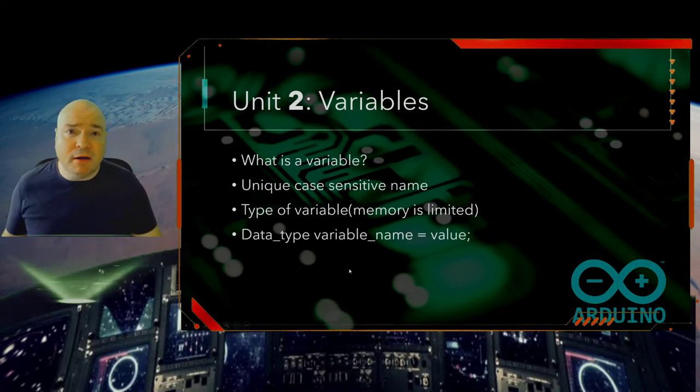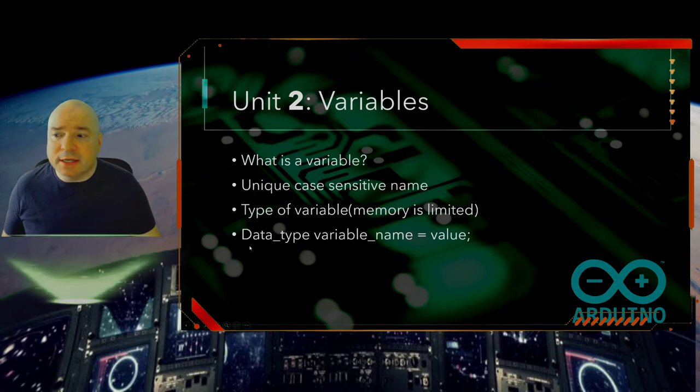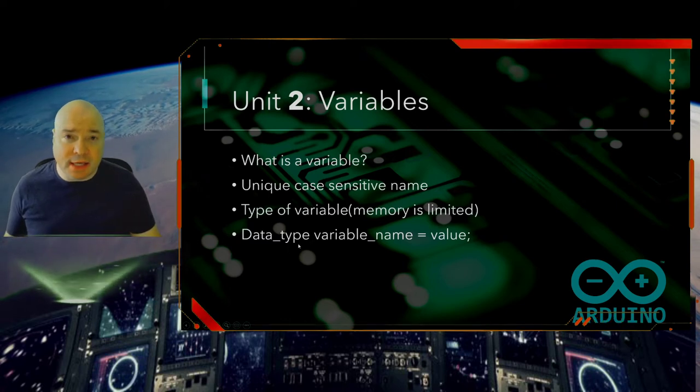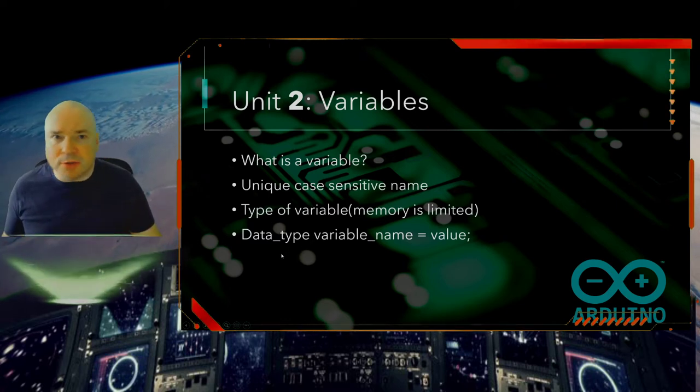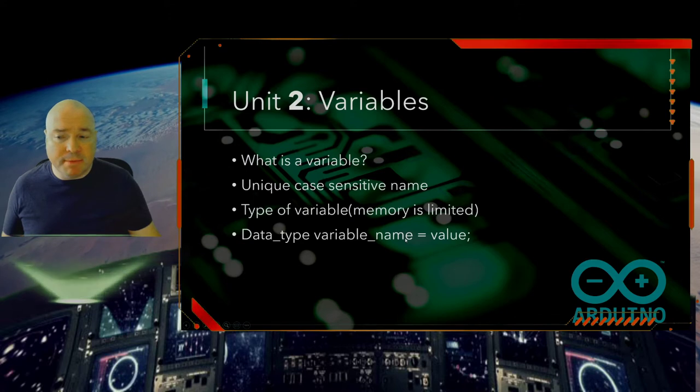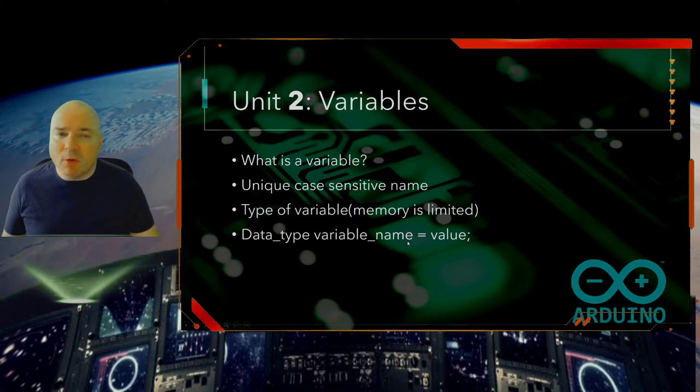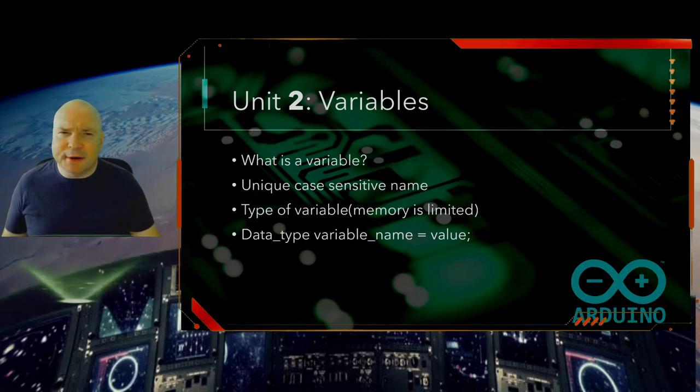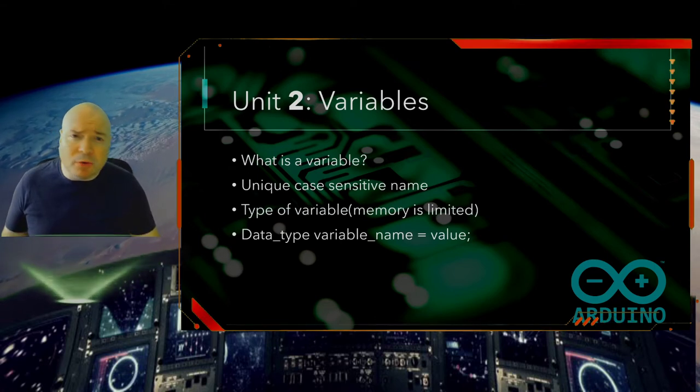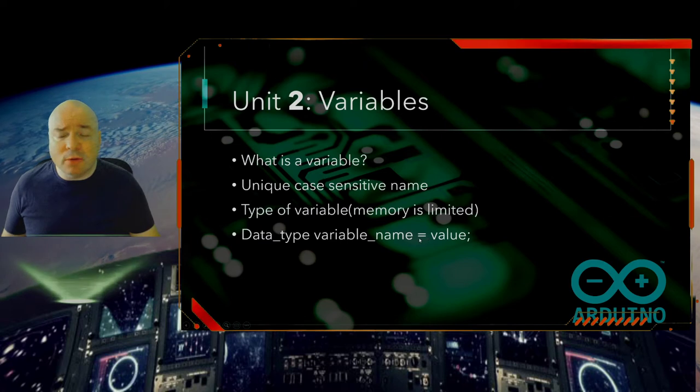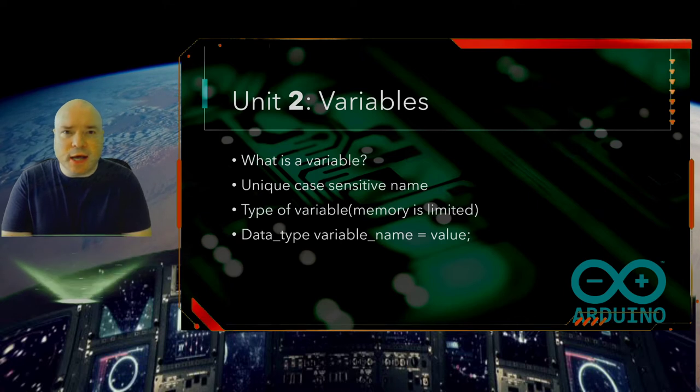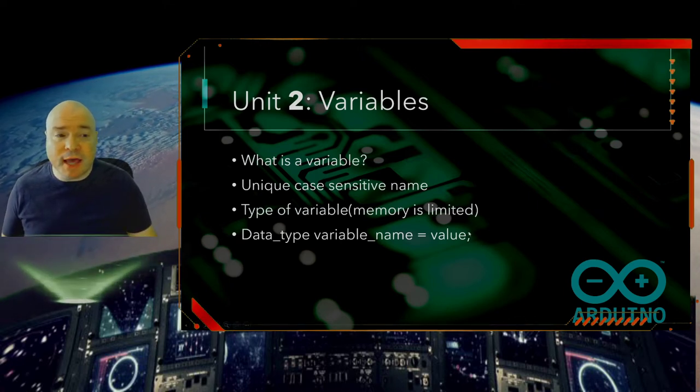So the way we declare a variable and initialize it is we use the word that declares the data type, which in this case would be int, or maybe double, or long, or short, or any other kinds of different data types, different size boxes. Then we have to give a variable name, and we want to make sure the name makes sense. We don't want to pick a variable name like monkey if we're talking about an LED light. That wouldn't make any sense. So maybe we want to call it LED pin or something that makes sense. And then we have an equal sign, and then we put the value that's appropriate for the data type inside the box.